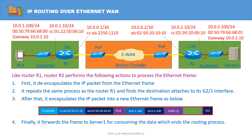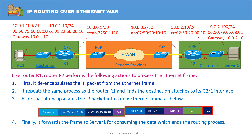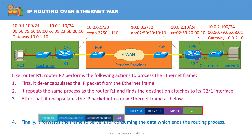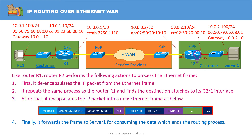Like Router1, Router2 performs the following actions to process the Ethernet frame. First, it de-encapsulates the IP packet from the Ethernet frame. It repeats the same process as Router1 and finds the destination attached to its G2/1 interface. After that, it encapsulates the IP packet into a new Ethernet frame. Finally, it forwards the frame to Server1 for consuming the data, which ends the routing process.